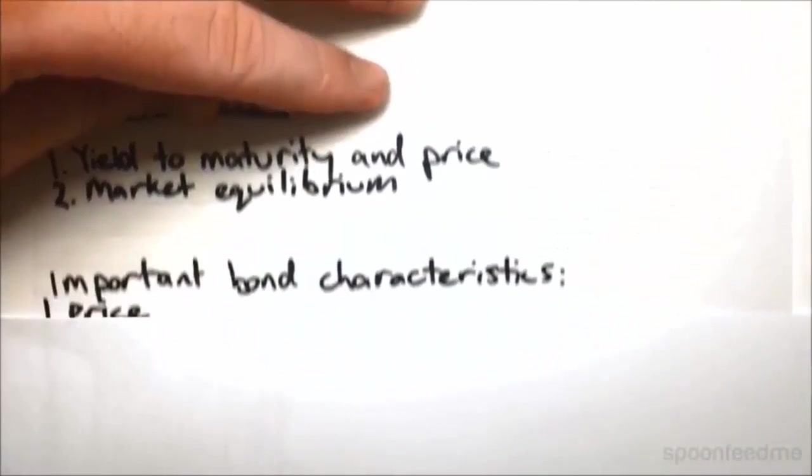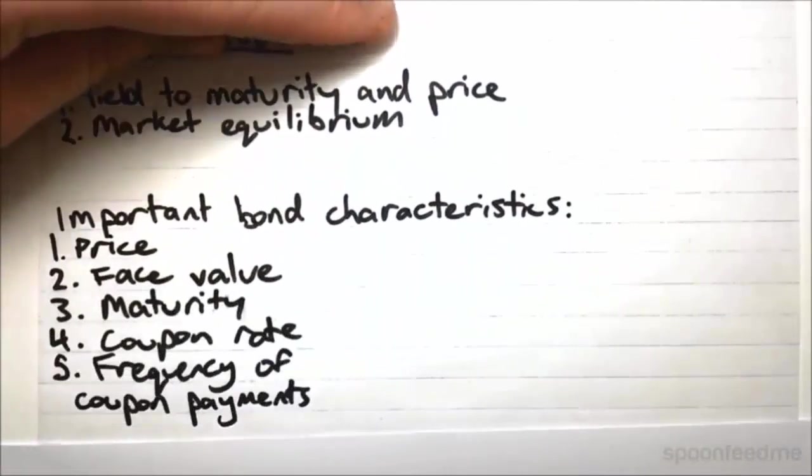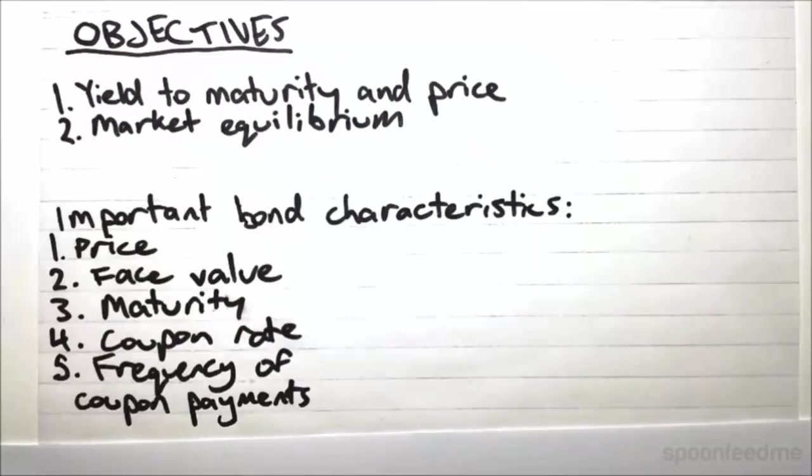So in the last video we had a look at these major characteristics of a bond, and basically if you know all five of these things here, then you know the full cash flow structure of the bond. So what I mean is you know all of the payments that are going to come through, what their amounts are, when they are going to be made.